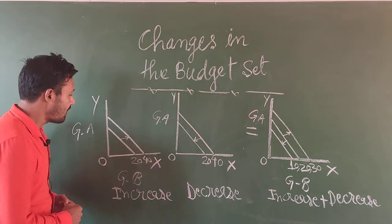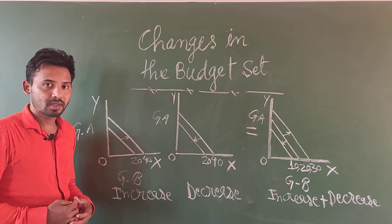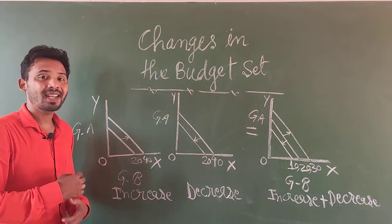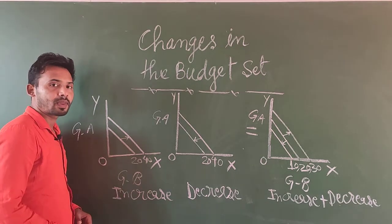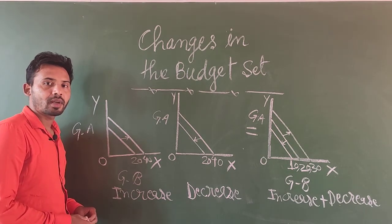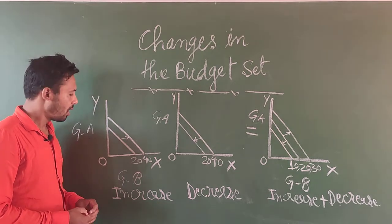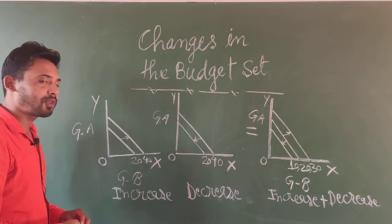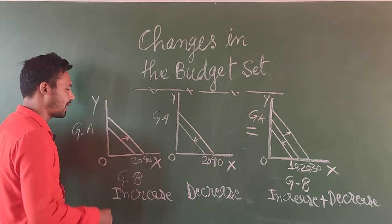Now, if our budget, if our income to spend on the bundle of goods is given more or increased, suppose from 20 it becomes 40, so our graph is outward moving as this one.